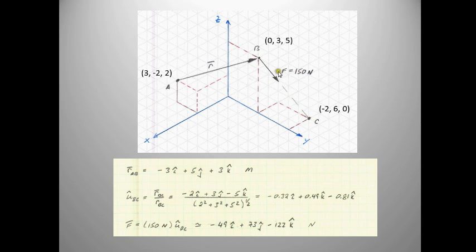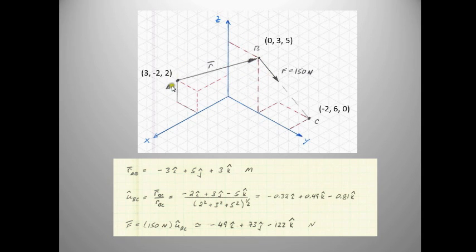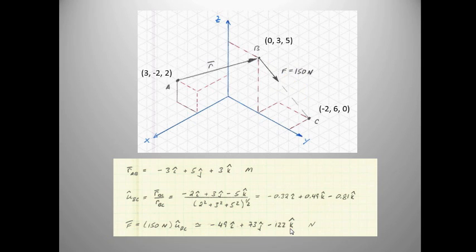We have a generalized force vector going along a line that points from point B to point C, and the force has a magnitude of 150 Newtons. The point of interest — where this force creates a moment — is about point A, and here's the position vector going from point A to point B. Think of this as some large block, with the force vector applied at point B, and we're curious about what happens around point A. The vector from A to B is minus 3i plus 5j plus 3k. Calculating the unit vector from B to C and multiplying by 150 Newtons gives us the total force vector.